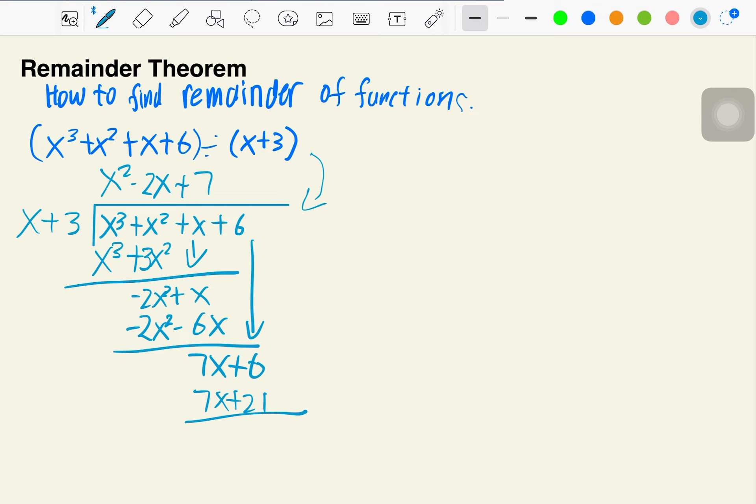At this point, you found the remainder goes negative 15, right? This is the remainder. But we're going to do it with a different way. This way it always works, no matter what you're doing.